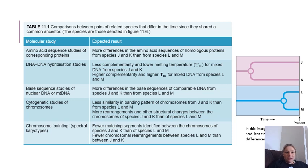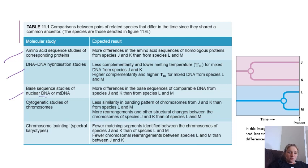This table compares pairs of related species that differ in the time since they've shared a common ancestor. It shows us how we can look at amino acid sequence, DNA to DNA hybridisation, base sequences of nuclear DNA or mitochondrial DNA, cytogenic structures, chromosomes and how they are similar, and chromosome painting — looking at karyotypes and how different or similar they are between organisms.